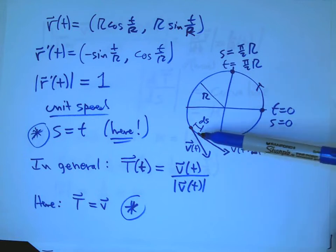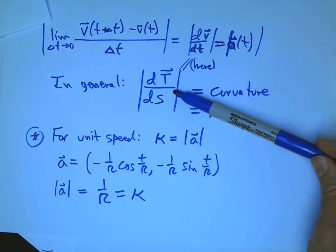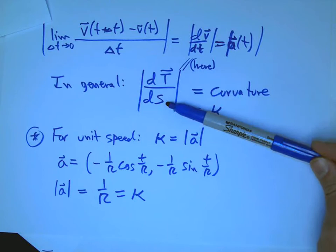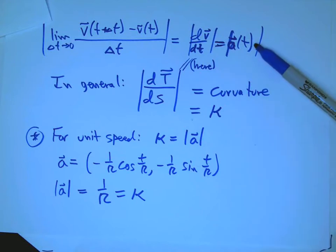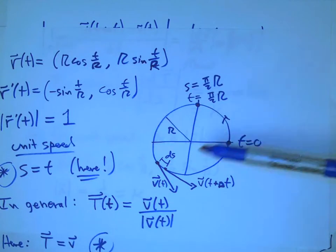I was lucky enough to have found a unit speed parametrization for a circle of radius r, and then I was able to take advantage of that to make this formula, which can be a bit complicated because it mentions capital T and s and not like v and little t. And it turned out to be the same thing as dv dt. It turned out to be the magnitude of the acceleration.